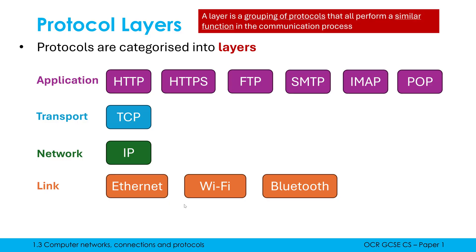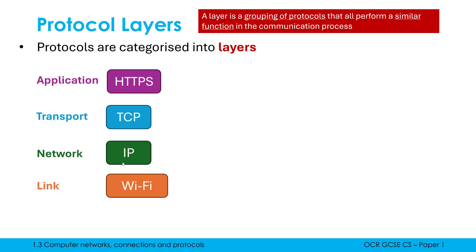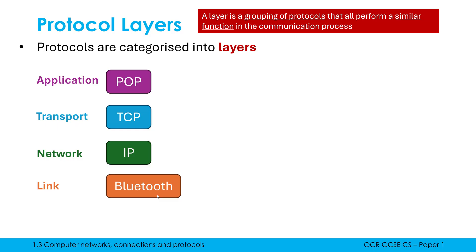A layer is a grouping of protocols that all perform a similar function in the communication process. For example, Ethernet, Wi-Fi, and Bluetooth are all at the bottom layer — they do a very similar job and can be substituted for one another. Likewise, the protocols at the top all do a similar job, and we only ever have one protocol running at each layer. We're able to substitute protocols in and out within a layer as needed.